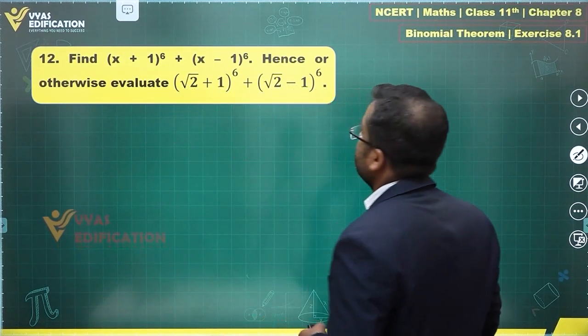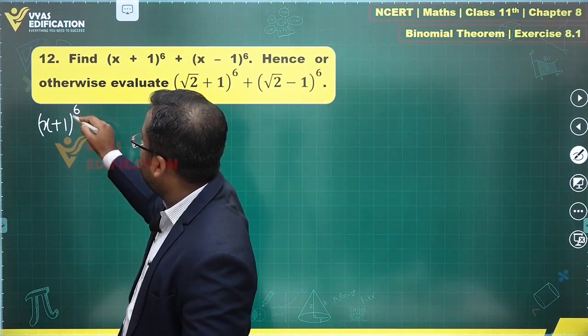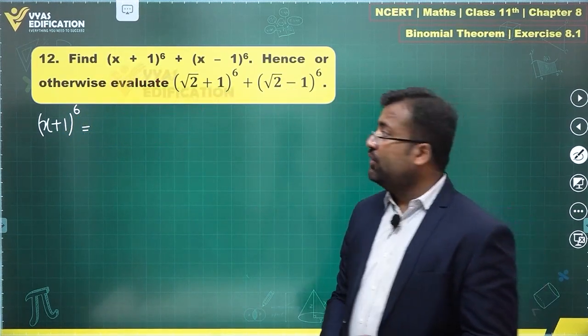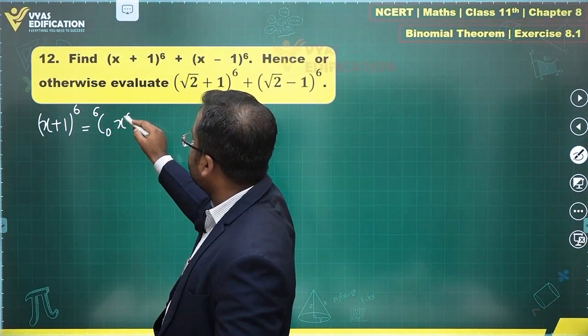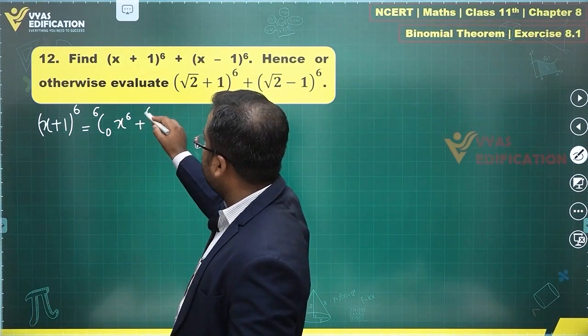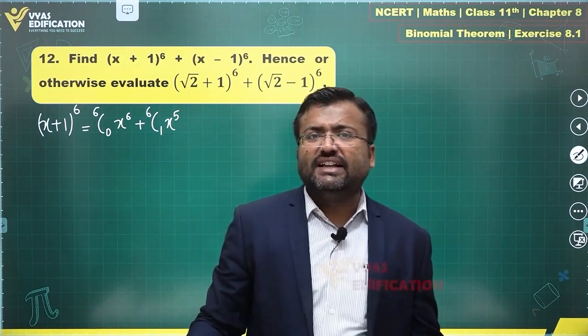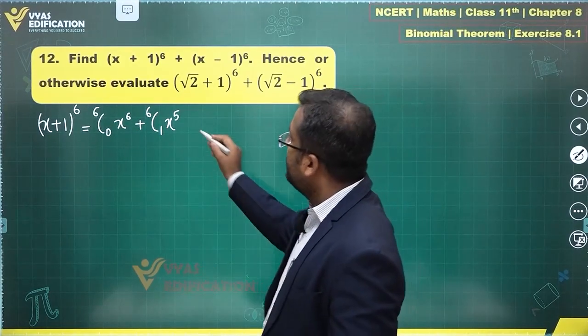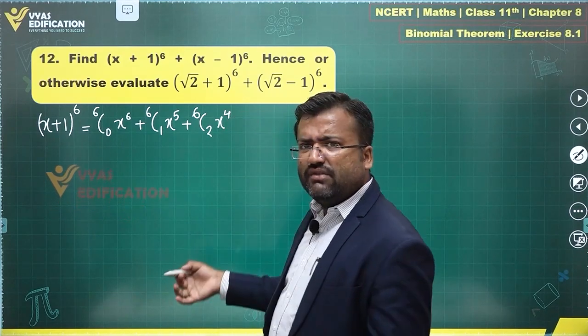What is this? (x+1)^6 is equal to what? This here will be equal to, as you observe, 6C0·x^6·1^0 which is 1. The next term, the coefficient will be 6C1. The power of x will reduce, the power of 1 will increase, but will that impact anything? No, 1^1 would be 1 only. The next term will be 6C2·x^4·1^2, which is simply 1.